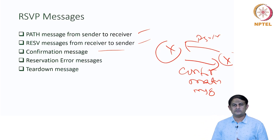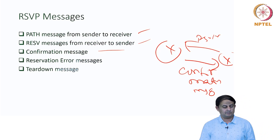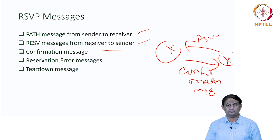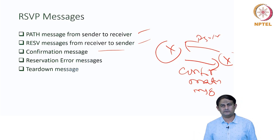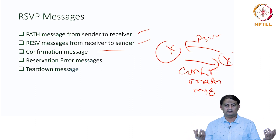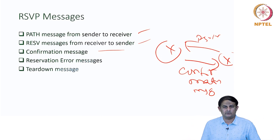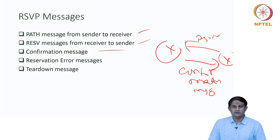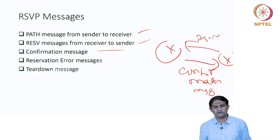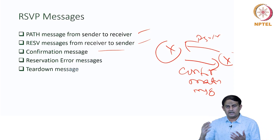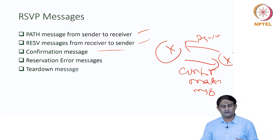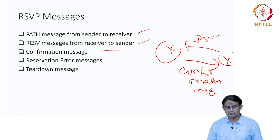The last type of message RSVP uses is the teardown message. When you are done with the conversation and want to end the transmission, you tell the network that whatever has been reserved can now be released by sending a teardown message. These are the different kinds of messages used in different contexts by RSVP.